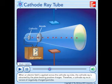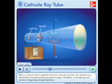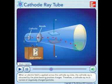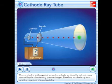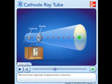When an electric field is applied across the cathode ray tube, the cathode ray is attracted by the plate bearing positive charges. Therefore, a cathode ray must consist of negatively charged particles. We know these negatively charged particles as electrons.